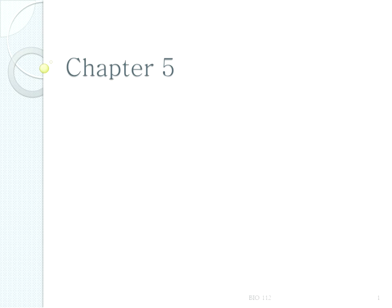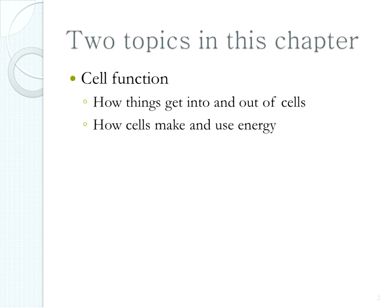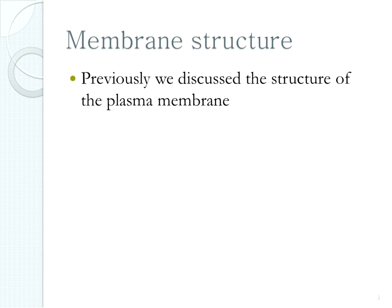Now that we've gone through cell structure in chapter 4, we can start to look at chapter 5, which covers cell function. There are two main topics: how things get into and out of cells, and how cells make and use energy. I'm going to present these in the opposite order from the book, because membrane transport builds immediately on what we discussed about the cell membrane, and energy will dovetail nicely with chapter 6 on cellular respiration.